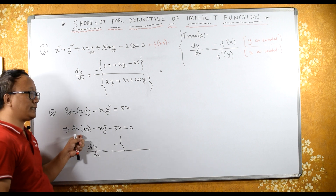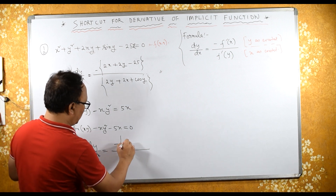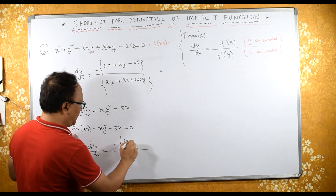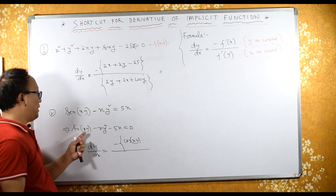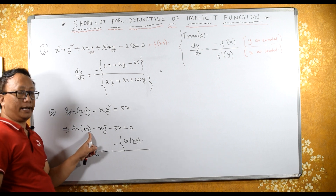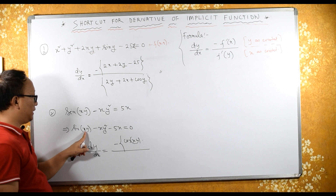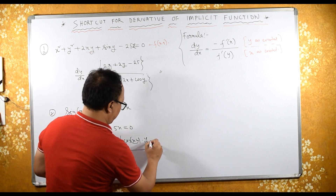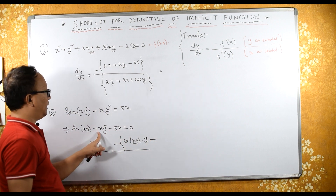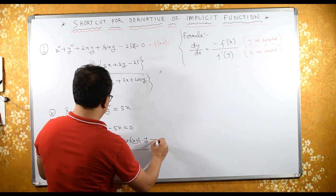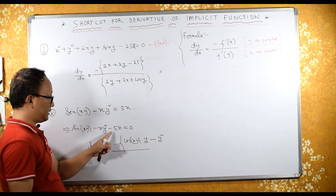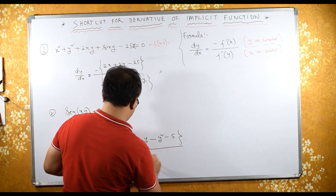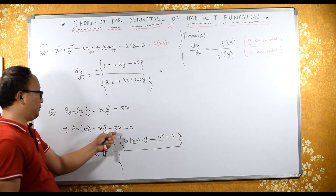Differentiating with respect to x and considering y as a constant: differential of sin is cos, so we get cos(xy) into d/dx of xy. Considering y as a constant, differentiating with respect to x gives y. Then minus y·x² because we differentiate with respect to x, minus 5.